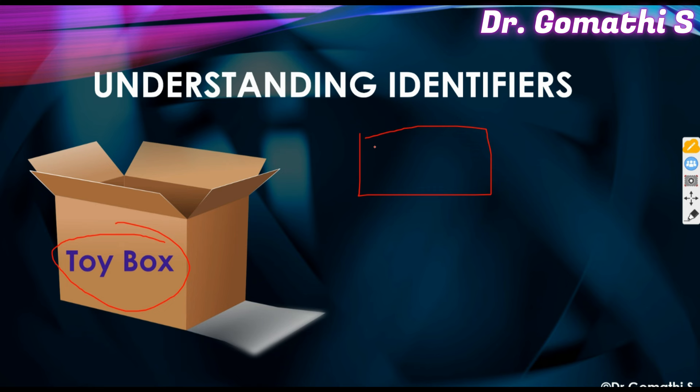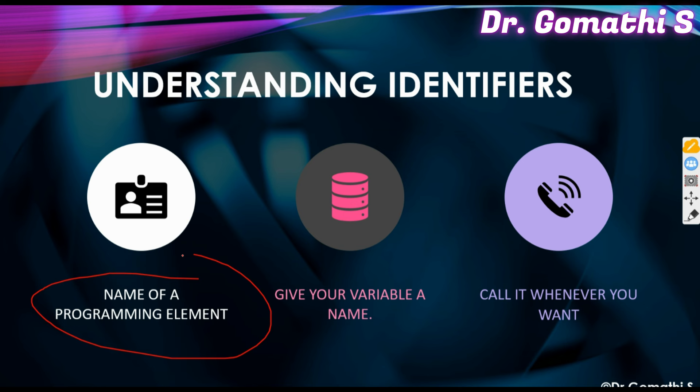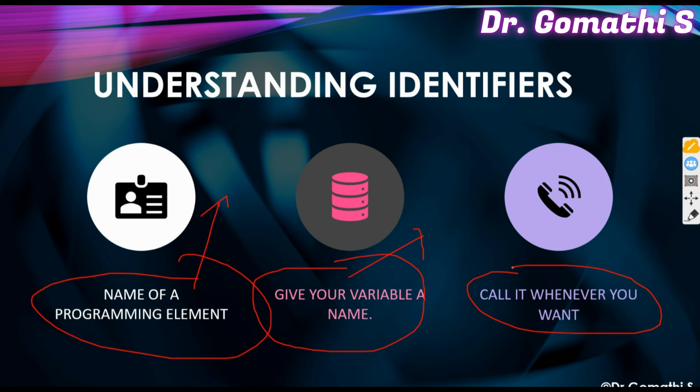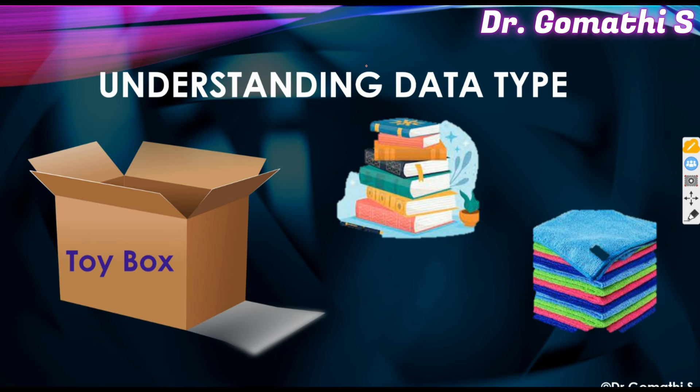The name of a programming element is what we call an identifier. You give your variable a name — the variable is used to store data, but you need to give it a name so you can call it whenever you want. These three concepts — variable, identifier, and data type — are interrelated, and we need to understand all of them.